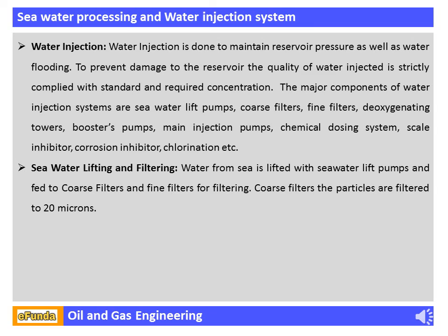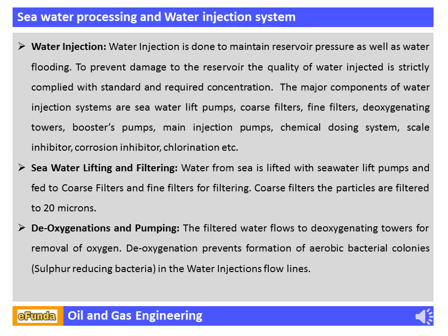The major components of the water injection system are sea water lift pumps, coarse filters, fine filters, deoxygenating towers, booster pumps, main injection pumps, and chemical dosing systems including scale inhibitor, corrosion inhibitor, and chlorination. Water from the sea is lifted with seawater lift pumps and fed to coarse filters, where particles are filtered to 20 microns. The filtered water then flows to deoxygenating towers for removal of oxygen, which prevents formation of aerobic bacterial colonies and sulfur-reducing bacteria in water injection flow lines.